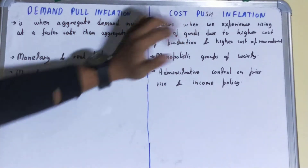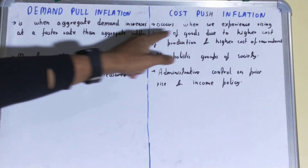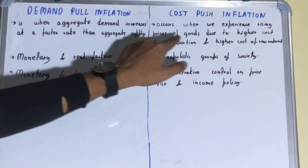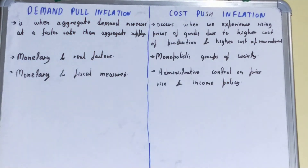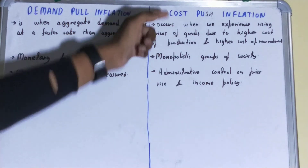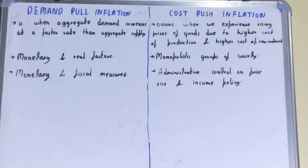If we talk about cost-push inflation, it occurs when we experience rising prices of goods due to higher cost of production and higher cost of raw material. So when the cost of raw material rises or when the cost of production rises, that ultimately results in increased prices of the goods or services being offered. And that is what cost-push inflation is.